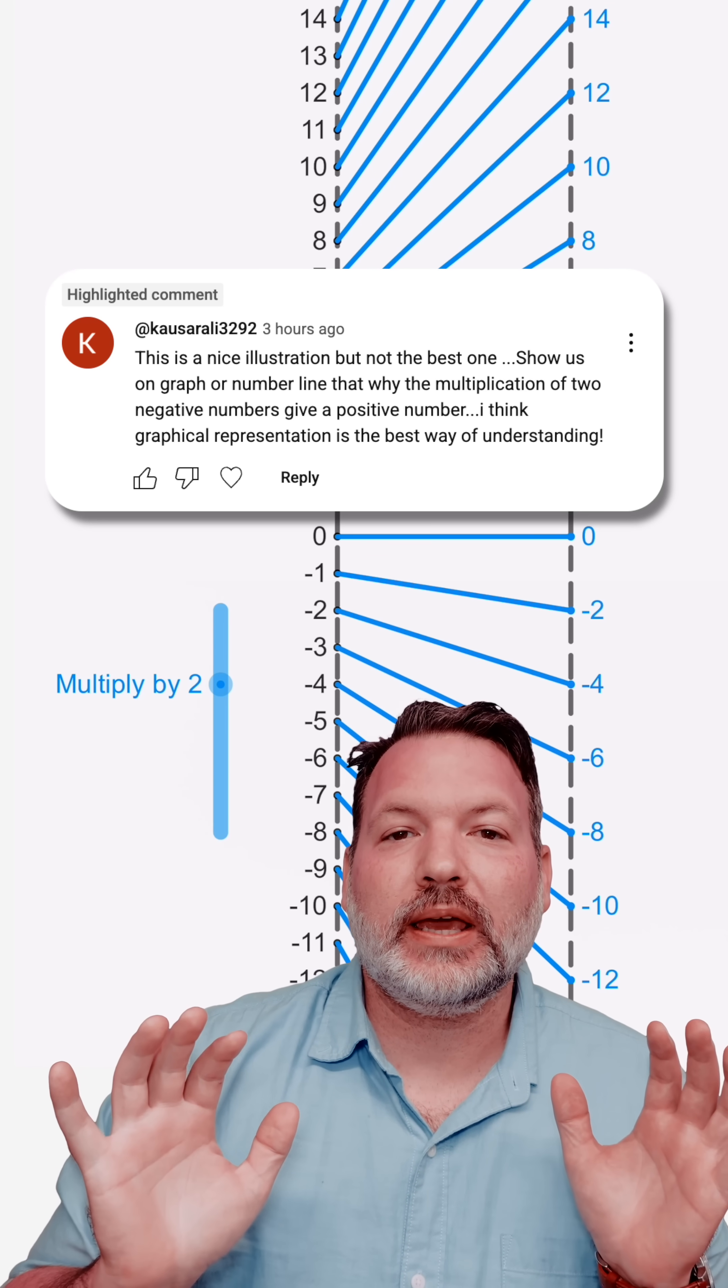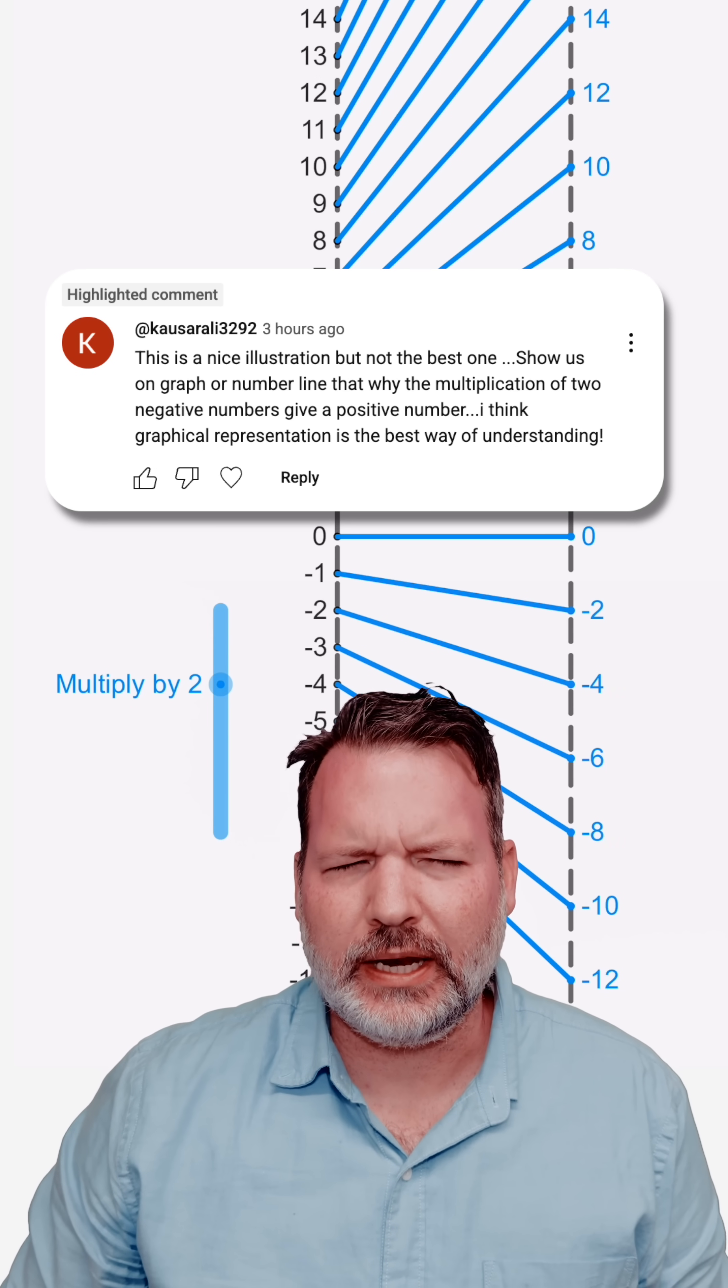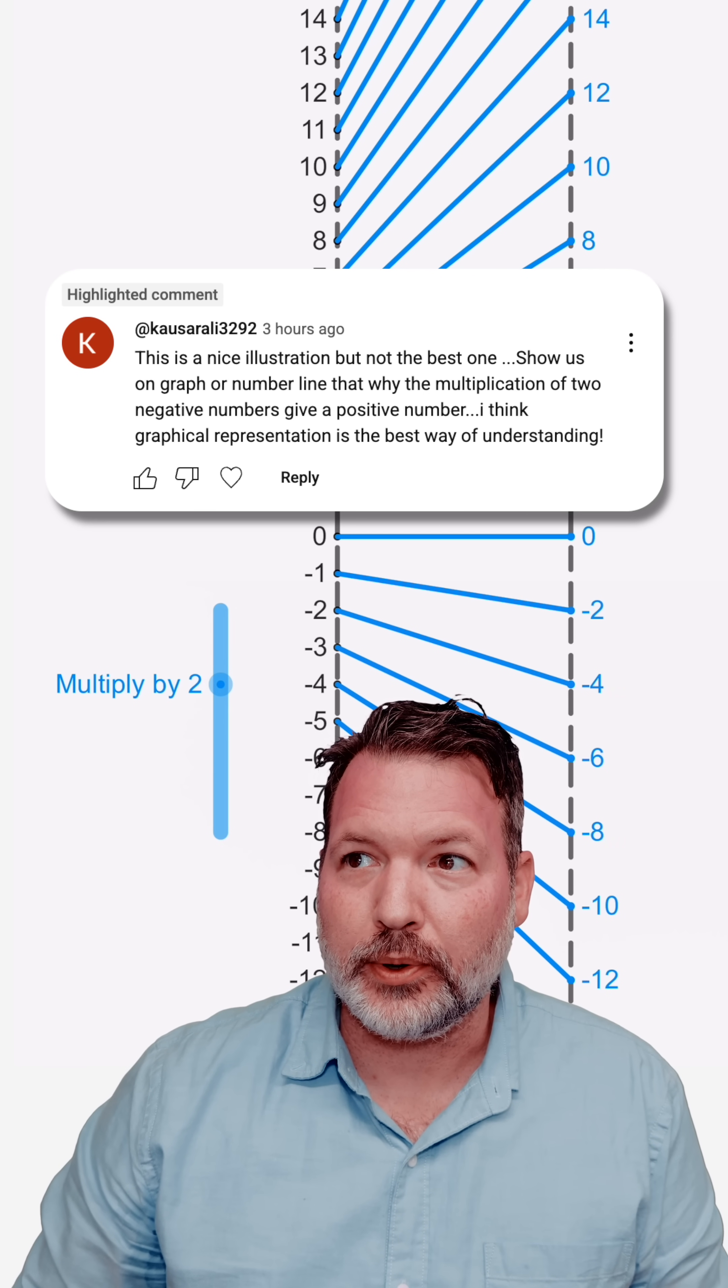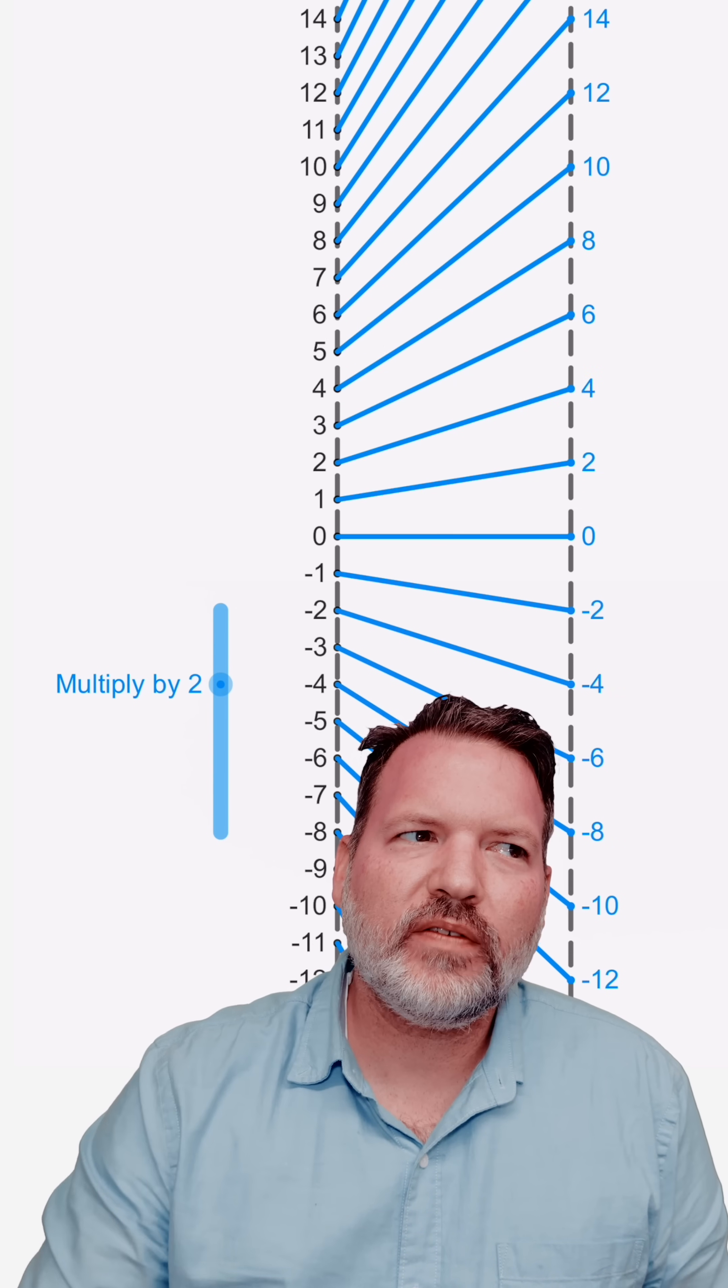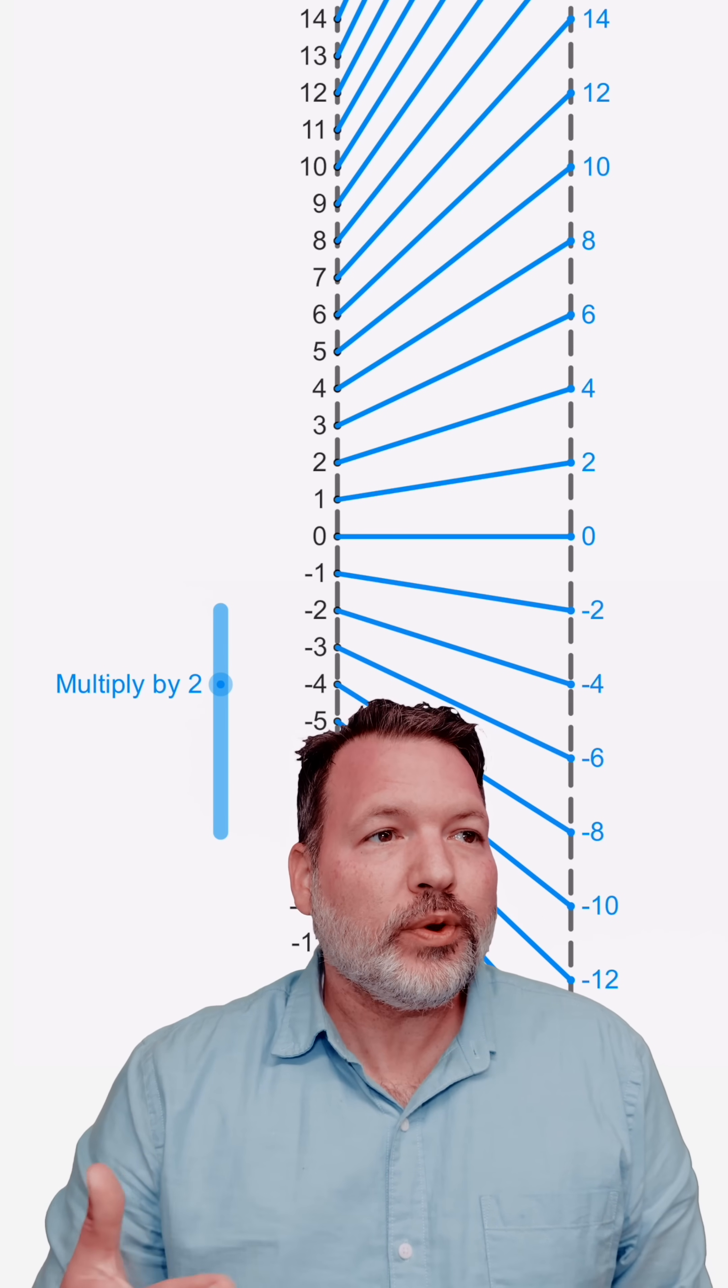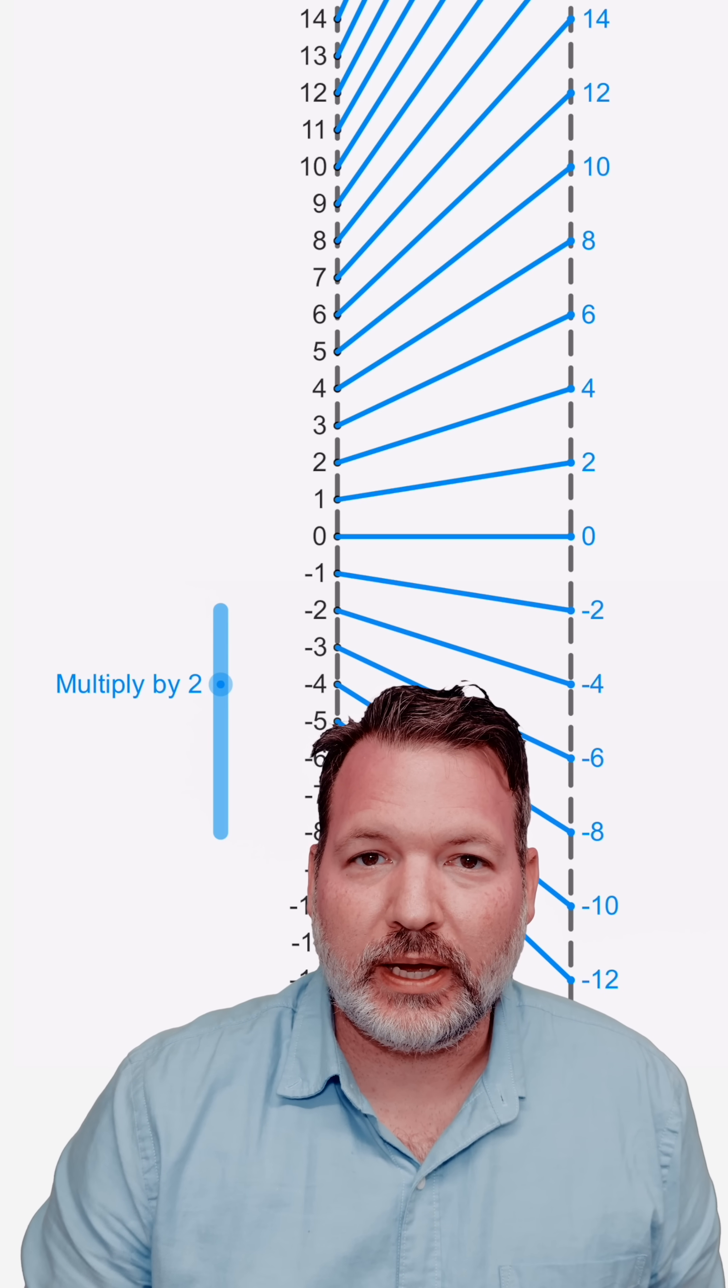Absolutely true. So let's see if we can get a more fundamental understanding of what it means to say that a negative number times another negative number should make a positive number. One of the things I'm going to argue is that we should think of multiplication as scaling, that this is the best real-world metaphor for what multiplication is.